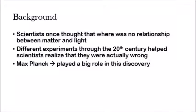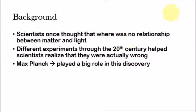As a background, scientists once thought that there was no relationship between matter and light — they said they are two completely different things. Different experiments through the 20th century helped scientists realize that they were actually wrong, that there was actually a relationship between matter and light. And the scientist Max Planck played a big role in this discovery. This background is going to come back later.